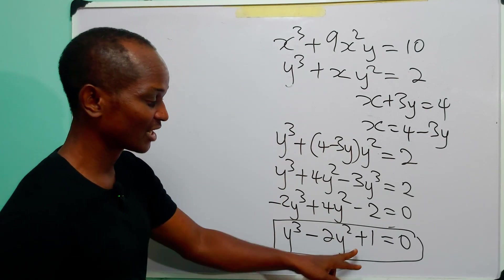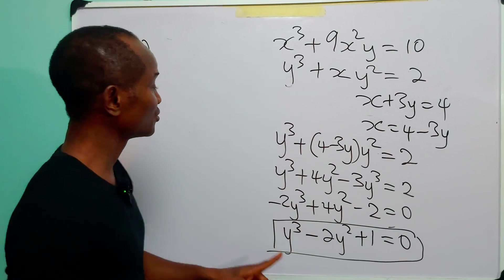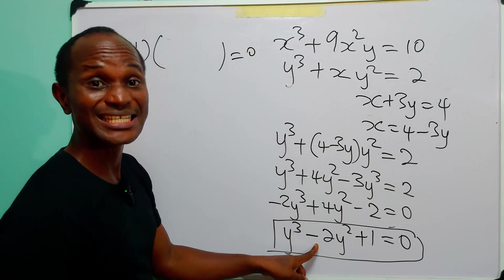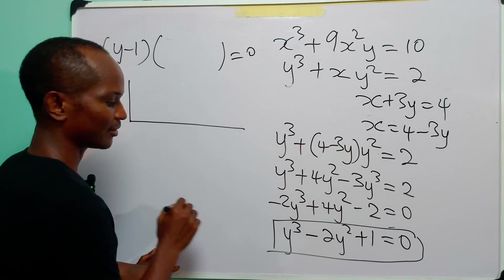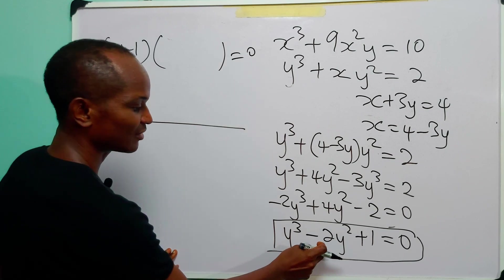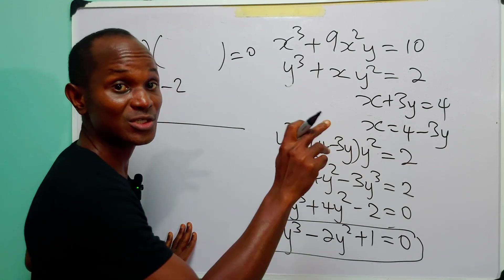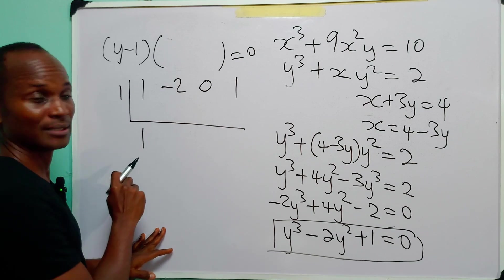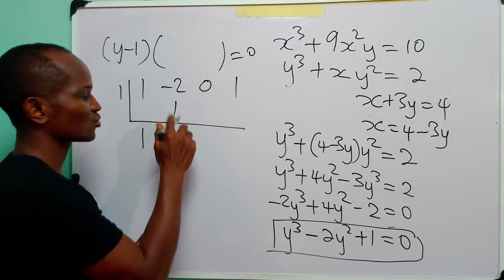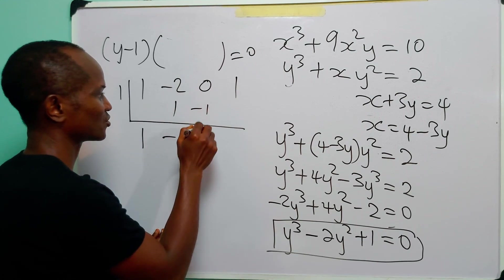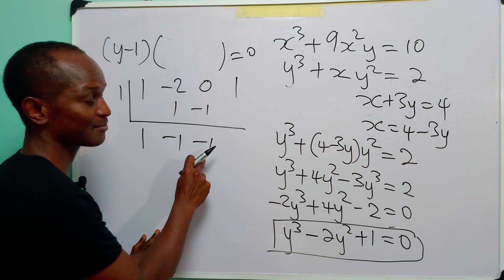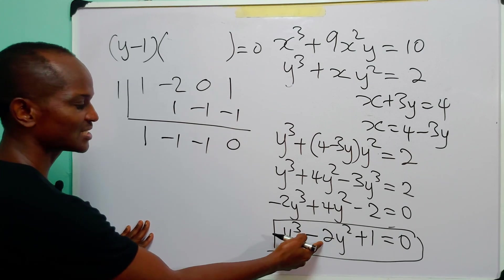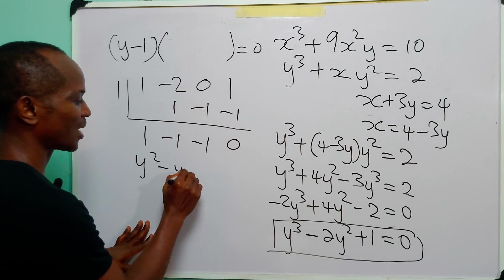To find the quadratic factor and the two remaining solutions, we divide the expression by (y − 1) using synthetic division. The coefficients are 1, −2, 0, 1. Dividing by 1: bring down 1; 1×1=1, −2+1=−1; 1×(−1)=−1, 0+(−1)=−1; 1×(−1)=−1, 1+(−1)=0. So the other factor is y² − y − 1.